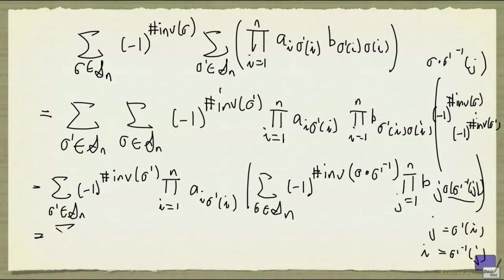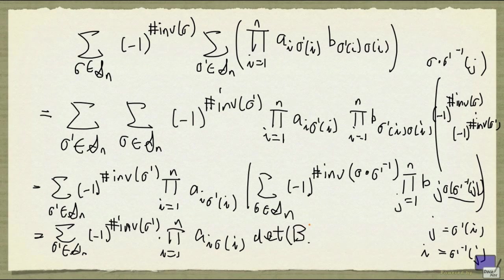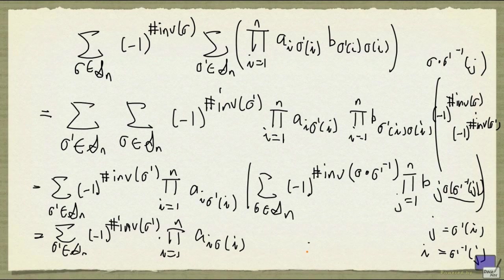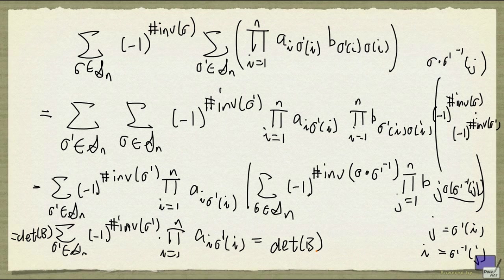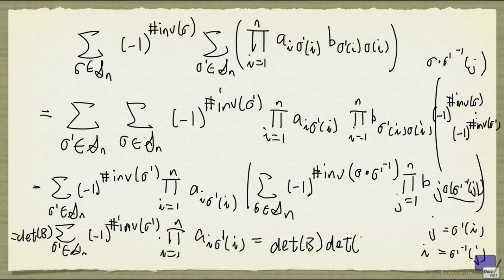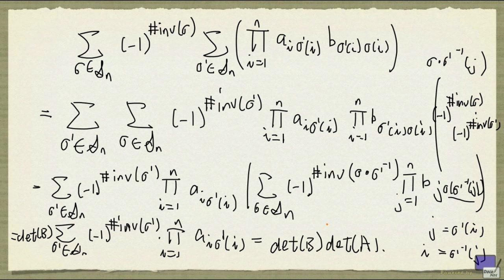Alright, so I can rewrite that as the determinant of B. But now, every term in this summation has a factor of the determinant of B, so I can take this out of the summation and write this instead. If you focus on this summation, it is the determinant of A, so that gives us the determinant of B times the determinant of A, which is what we are required to prove.